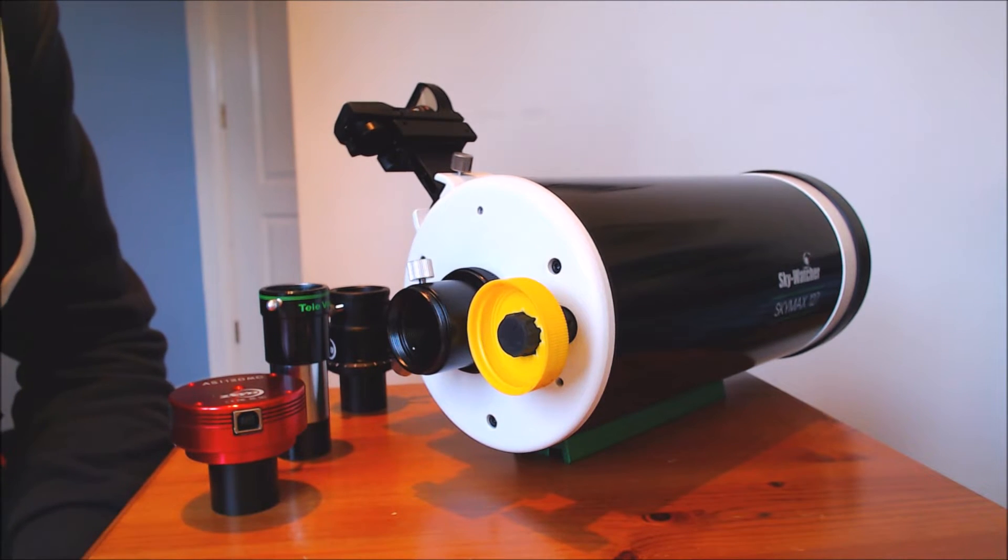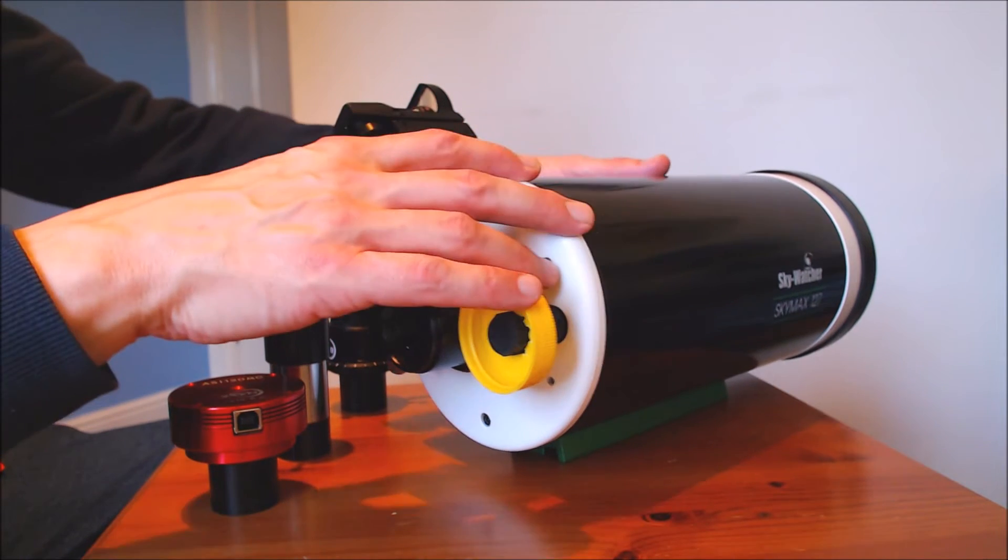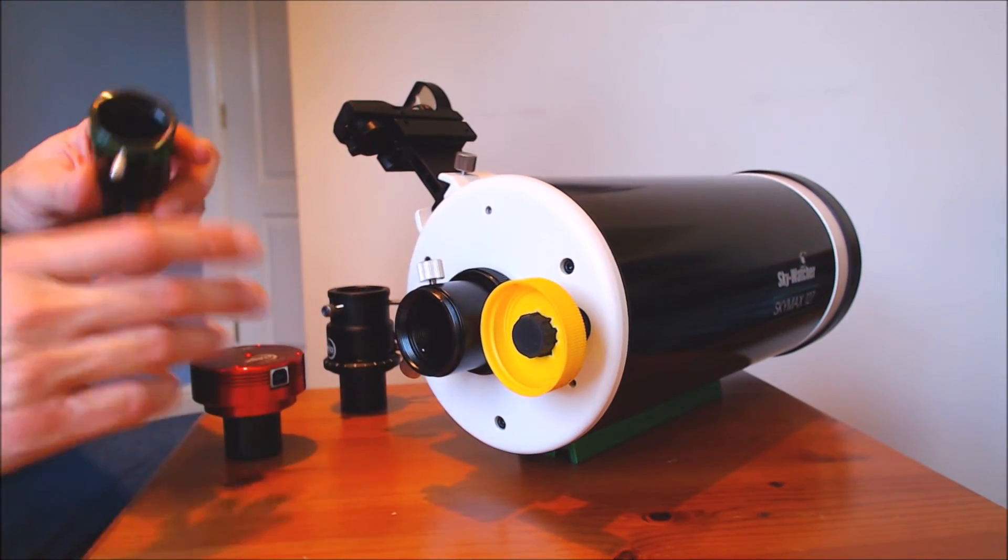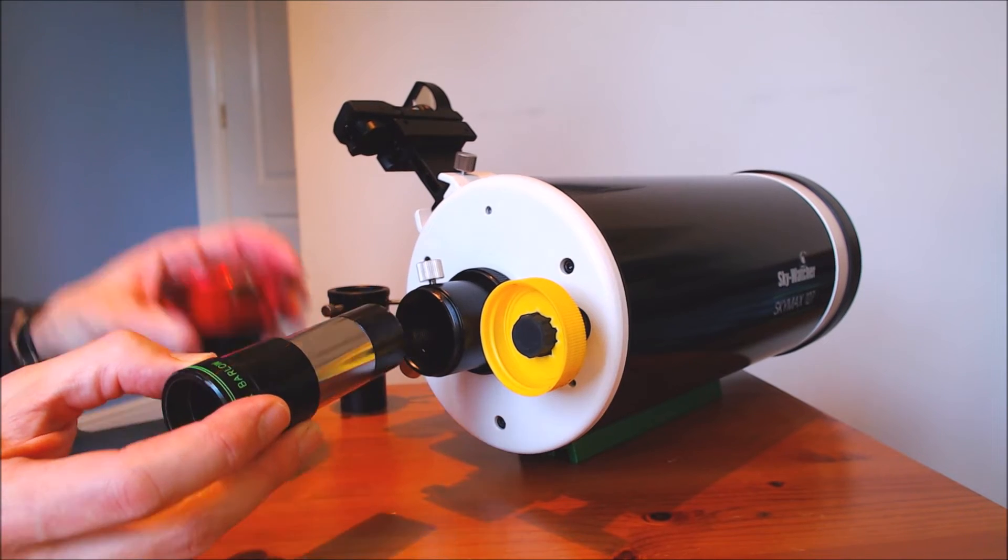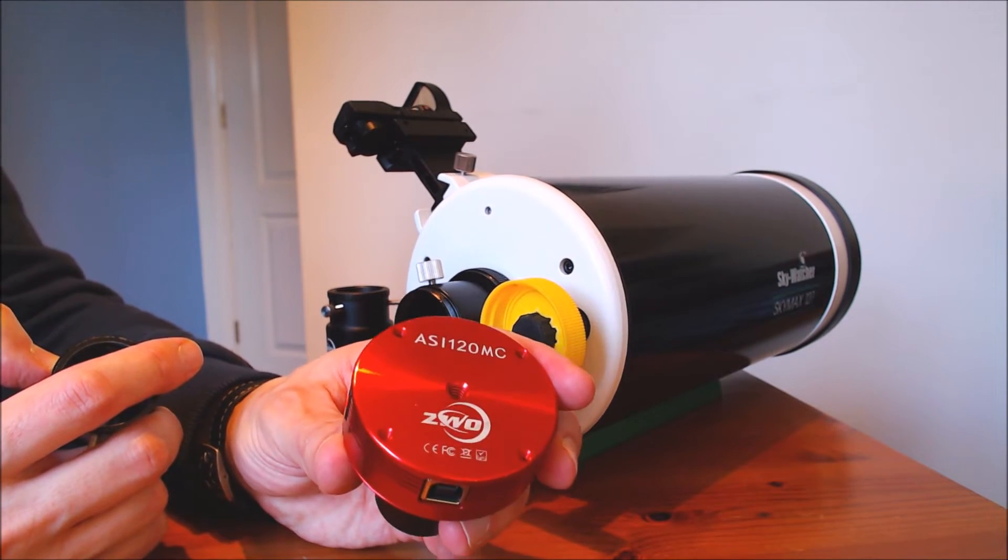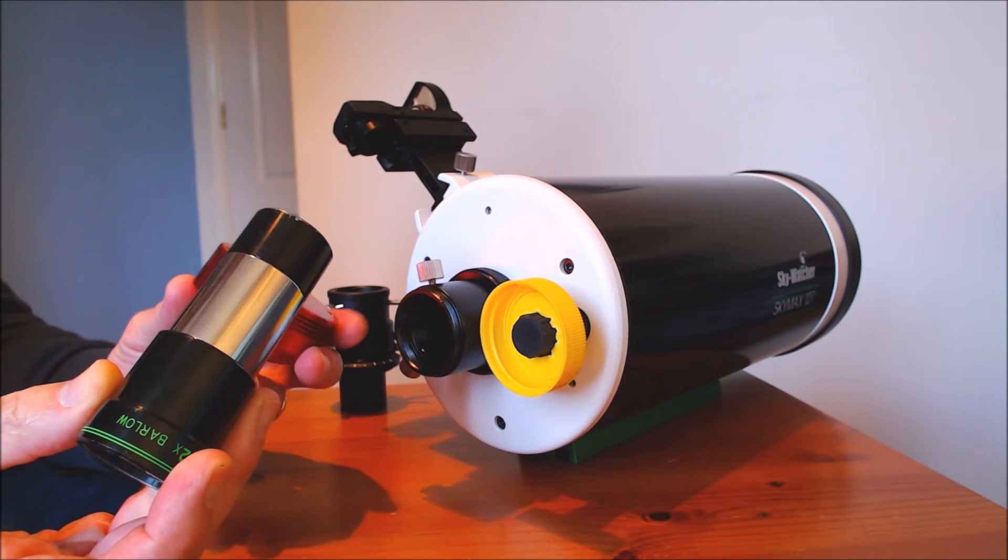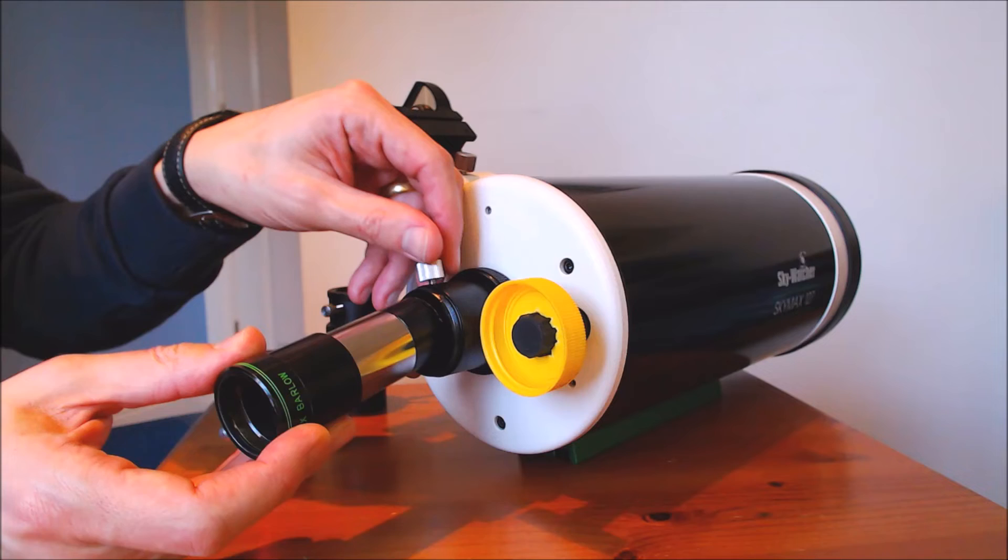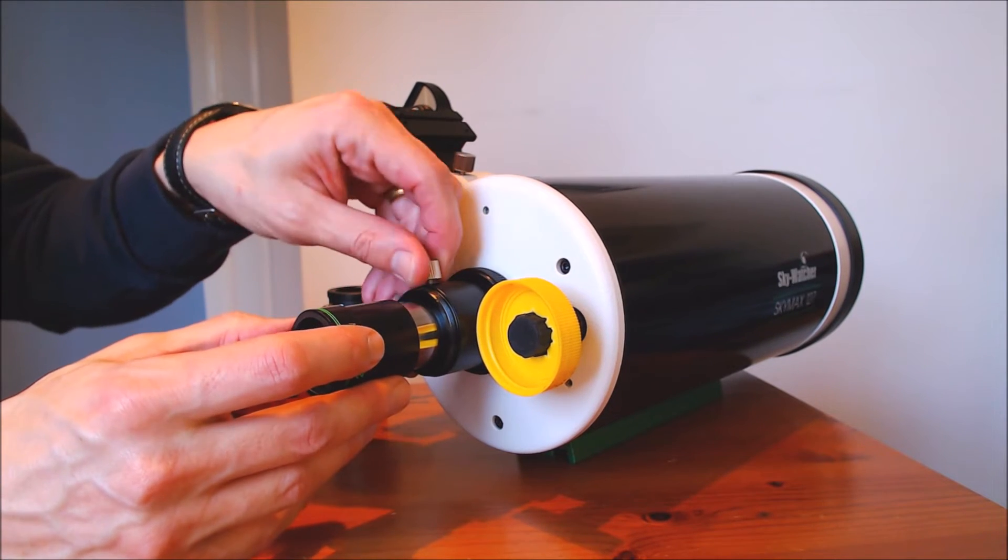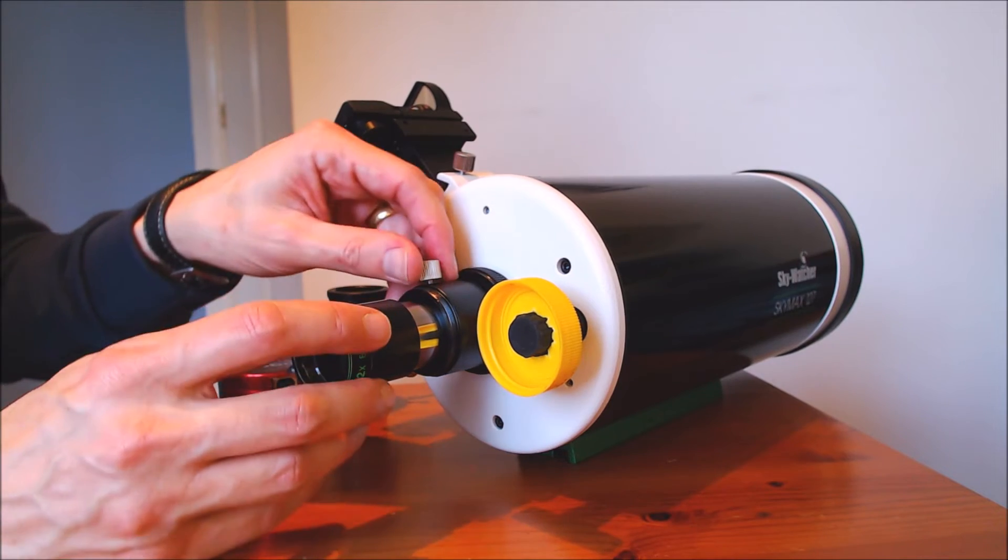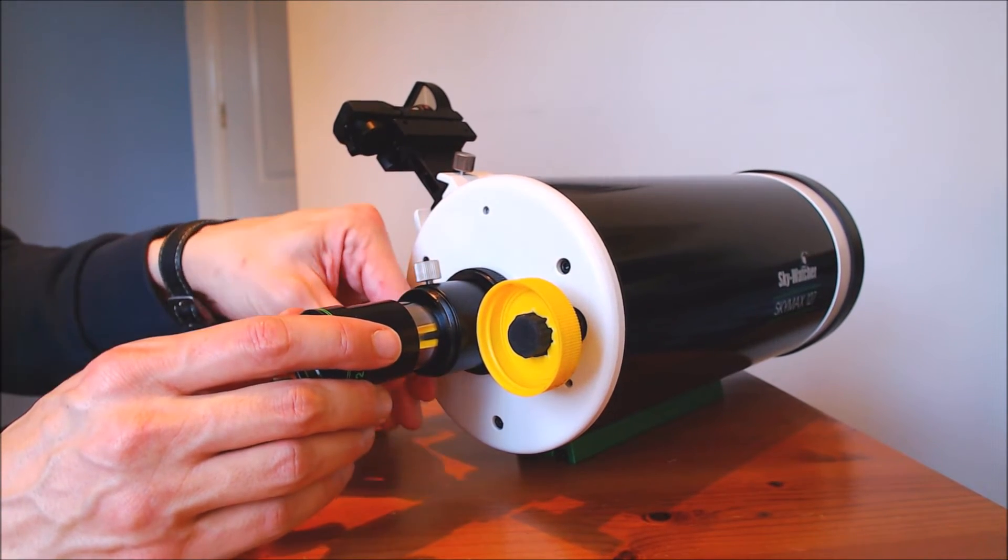I'm going to use SkyMax 127 and then a 2x Barlow and a ZWO ASI 120 camera. These are the standard parts of the setup I use for imaging. When we use the ADC we're going to put in the Barlow as normal into the visual back. It doesn't go fully in on the SkyMax but that's okay. It's not really elegant but it reaches focus.